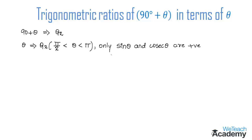Let us begin with the trigonometric ratio sine. For sine(90° + θ), since 90° + θ lies in the second quadrant where sine is positive, and since 9 is an odd multiple, the ratio sine changes to cos. So we get positive cos θ as the result for sine(90° + θ).